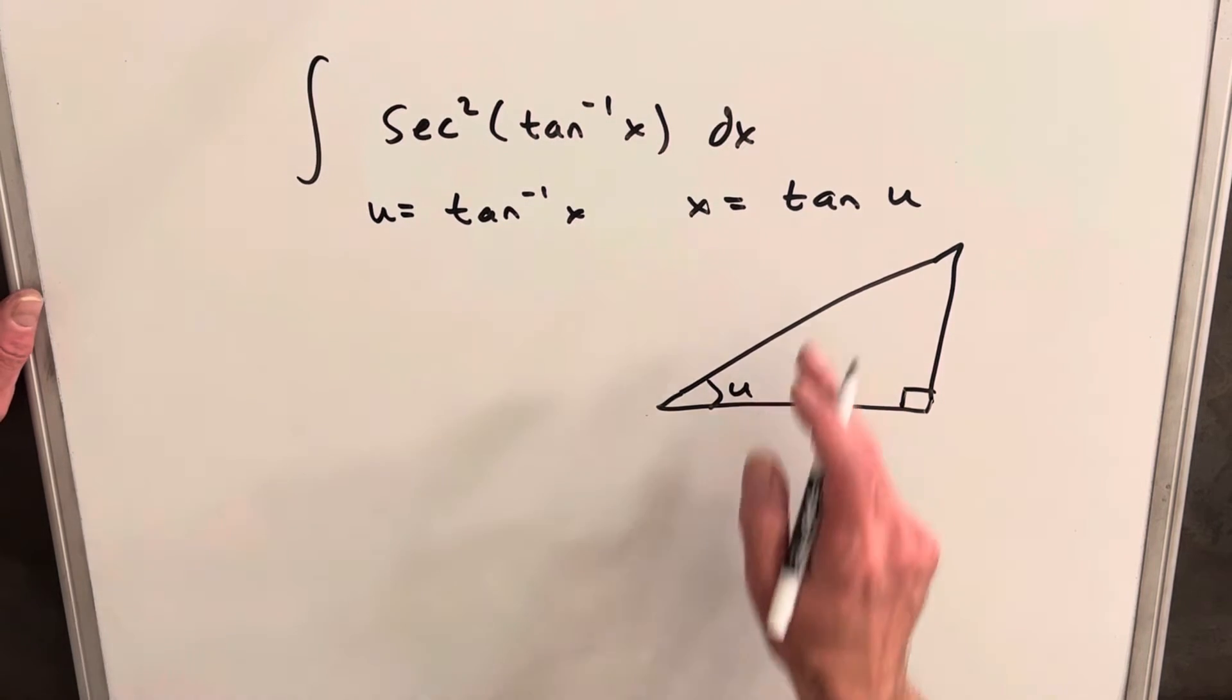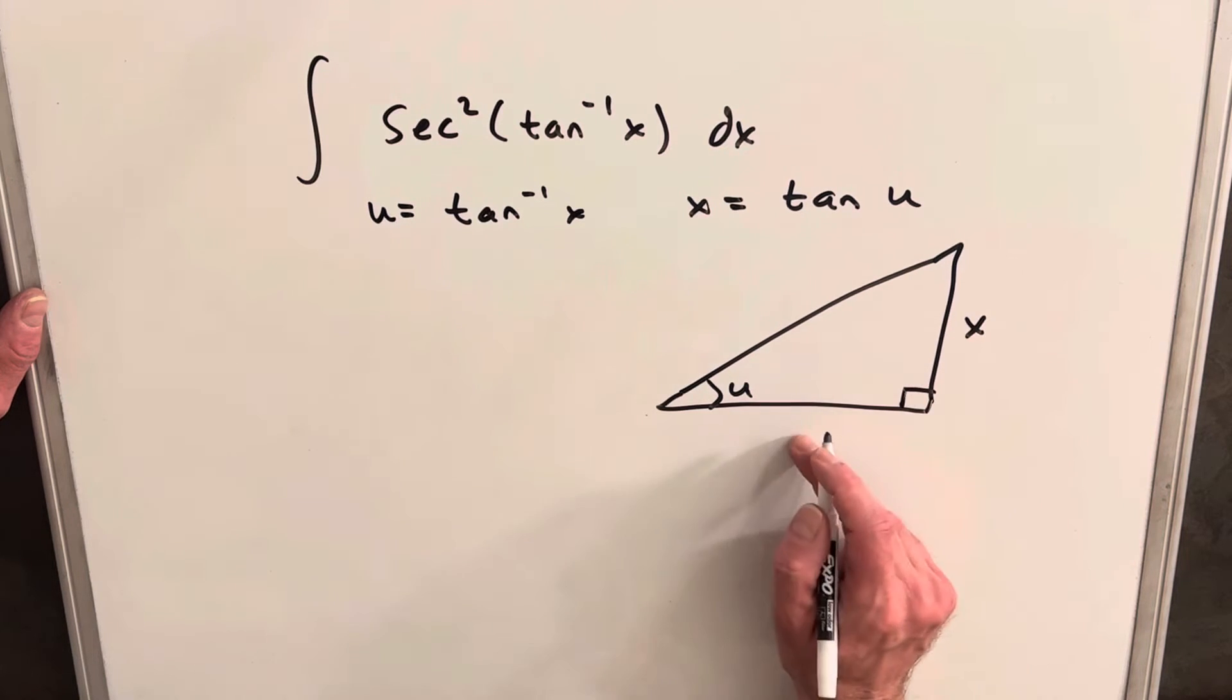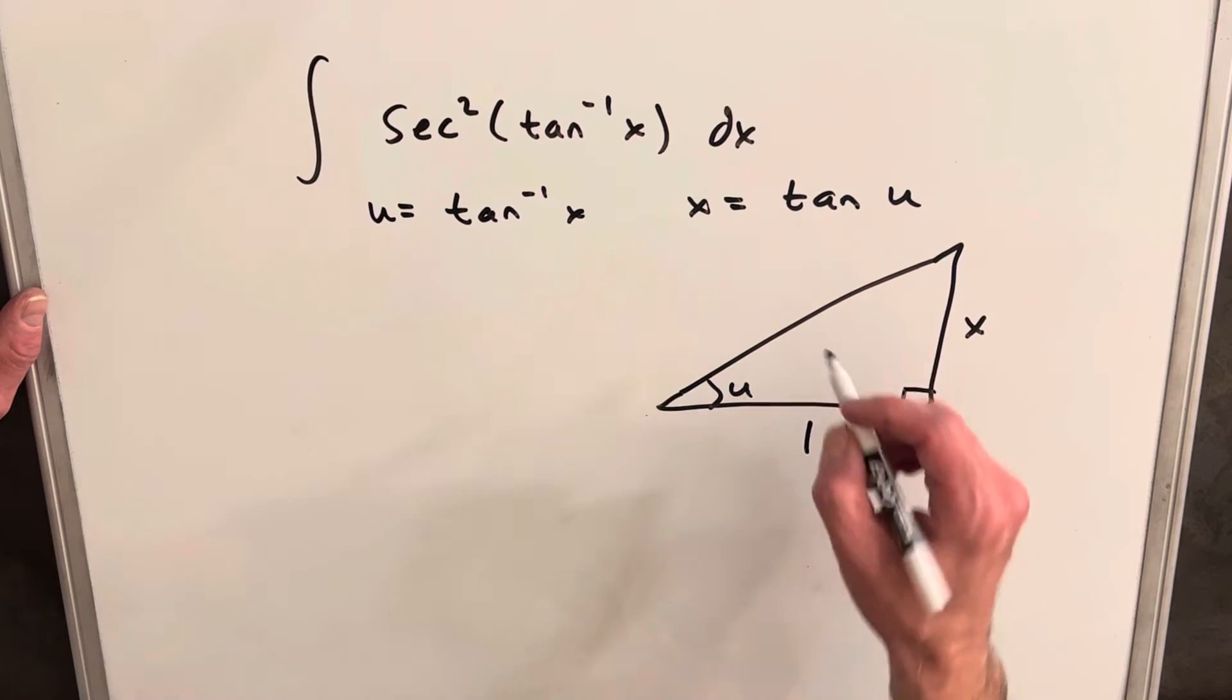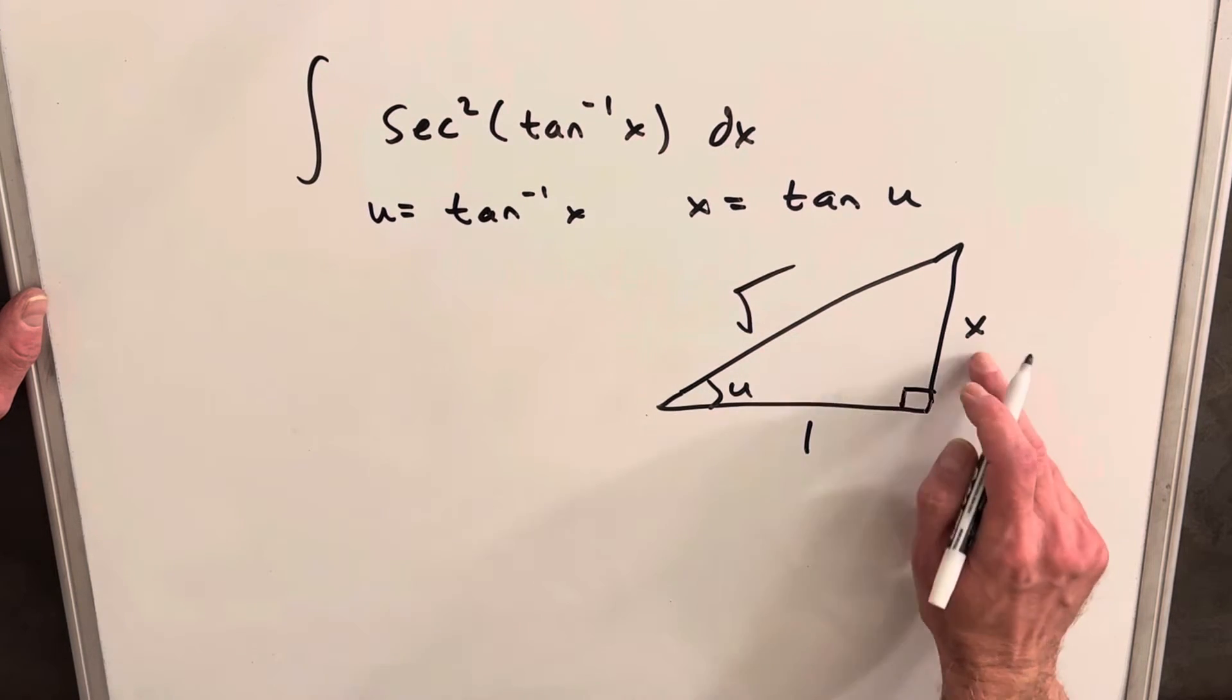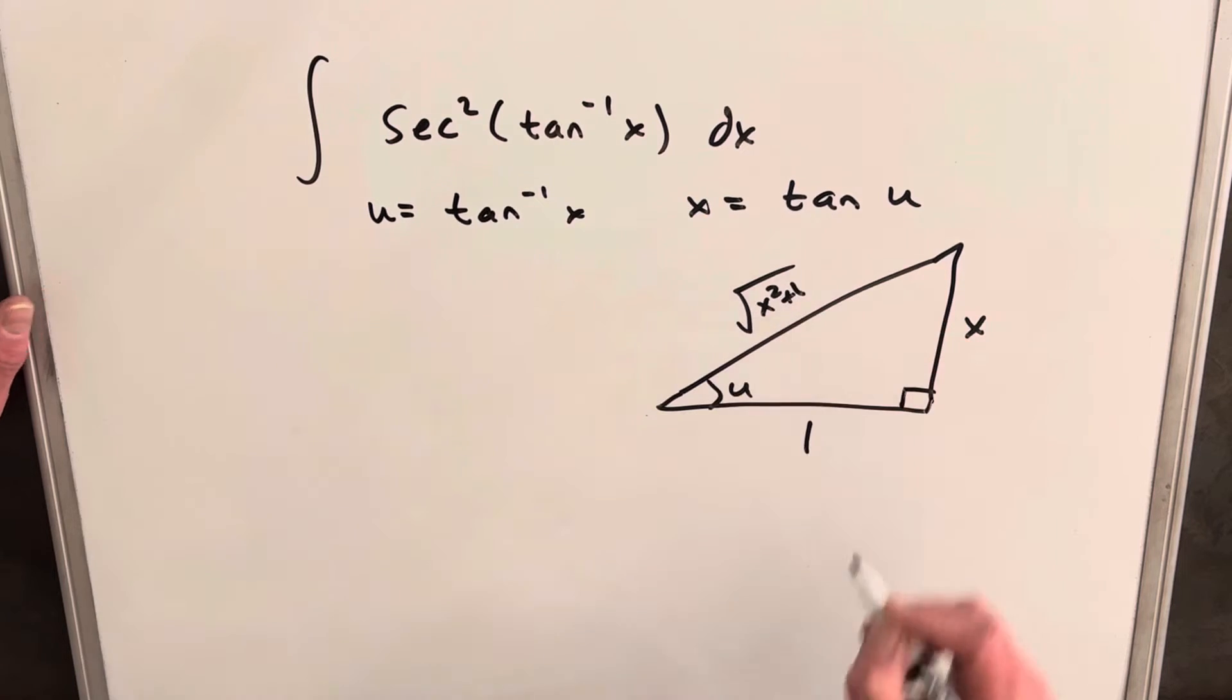So if we have our angle u, tan of u is x, so it's just going to be x opposite over adjacent 1, using the Pythagorean Theorem. That makes our hypotenuse this squared plus this squared inside a square root. So we're going to have square root of x squared plus 1.